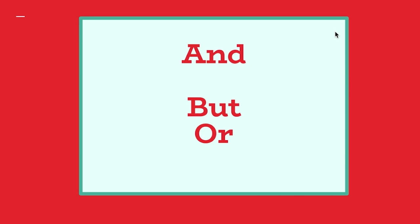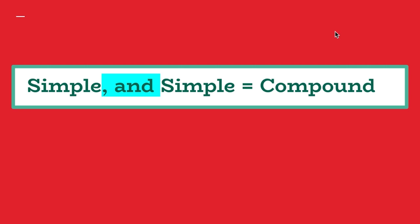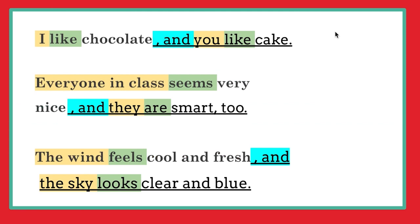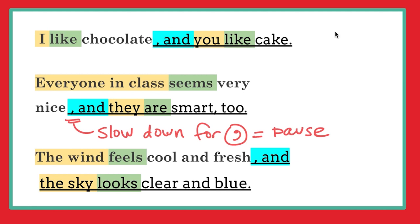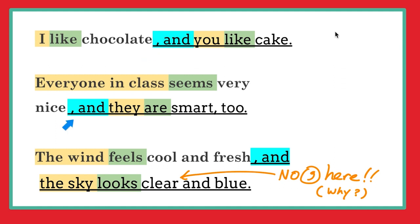And, but, or — they all have the same grammar, just a little different in meaning. Simple sentence plus simple sentence — that's one kind of compound sentence. The word 'and' means both of these are true. For example: I like chocolate and you like cake. They're both true. Everyone in class seems very nice, and they're smart too. The wind feels cool and fresh, and the sky looks clear and blue. These sentences put together with 'and' have a comma, and they're complete sentences — both have one subject, one verb.